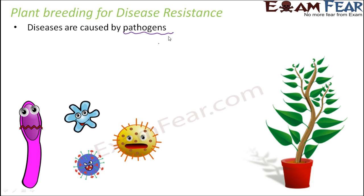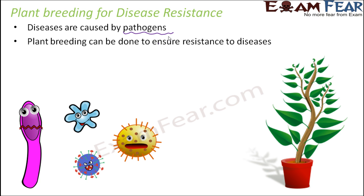How can we control the loss due to these diseases? In the case of human beings, there are also many diseases caused by pathogens. We treat those diseases with the help of medicines. But even before you can invent a medicine for a disease, two things should be known: the organism causing the disease — whether it is bacteria, fungi, or virus — and the mode of transmission, that is how the disease gets transmitted from one organism to another. If those two things are known, then a treatment or prevention for that disease can be found.